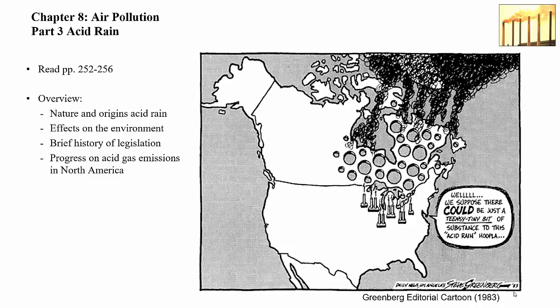Here is an overview of the lecture. I'm going to talk about the nature and origins of acid rain, a little bit of the science, the effects on the environment — which is mainly on freshwater aquatic environments — and a brief history of the legislation and cooperation between Canada and the United States. I'll also show progress made in acid deposition rates in North America. I should mention that acid rain is not just a North American problem; in western Europe, acid gas emissions from Germany and England are carried by prevailing winds and affect Sweden, Norway, and Finland.